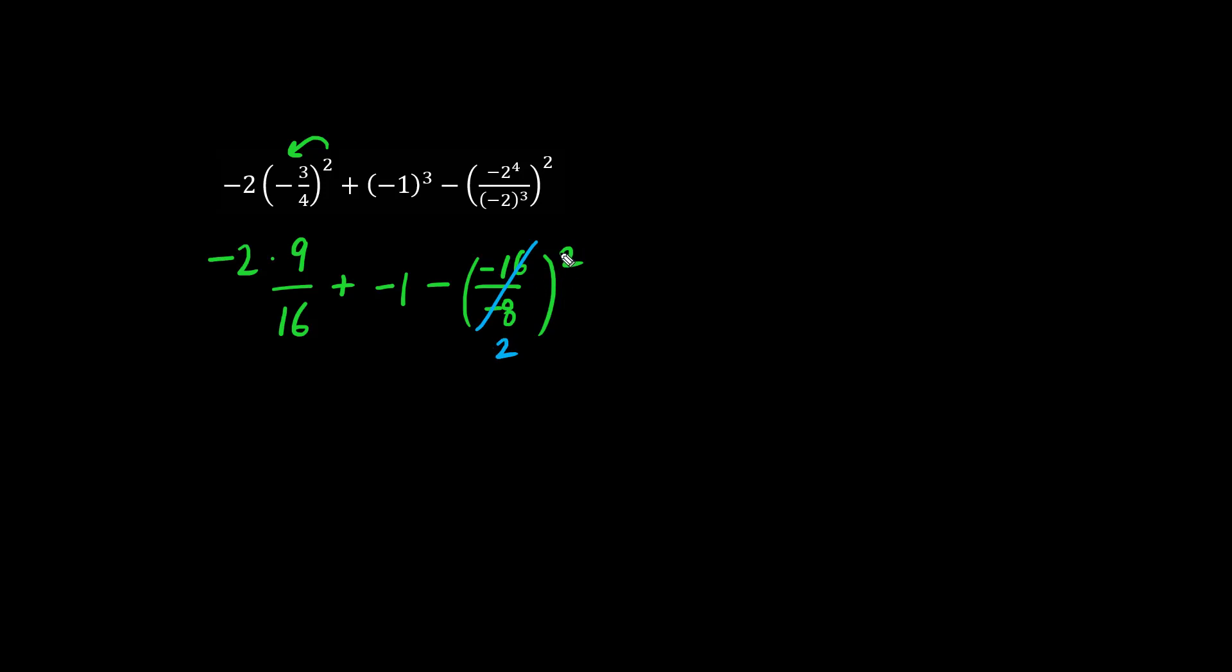Two negatives in the bracket becomes positive, and 16 divided by 8 is 2. So we work out exponents. 2 squared is 4. So let's clean this up here.